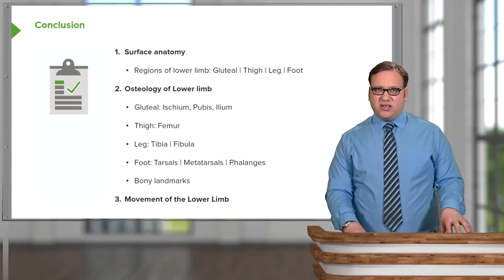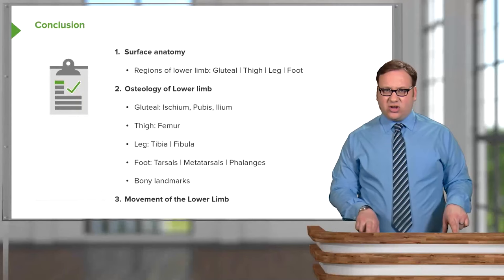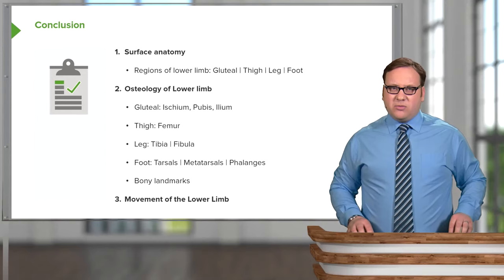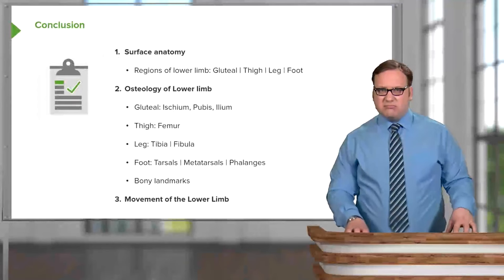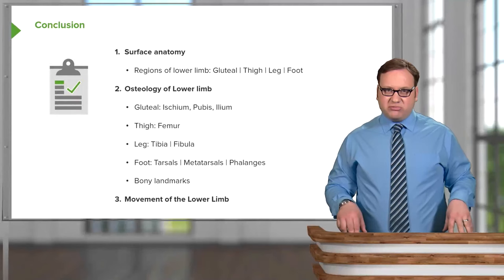In this lecture, we've looked at the surface anatomy of the lower limb — the inferior appendicular skeleton — covering the gluteal, thigh, leg, and foot regions. We've looked at the osteology, including the ischium, pubis, and ilium of the hip bone; the femur of the thigh; the tibia and fibula of the leg; and the tarsals, metatarsals, and phalanges of the foot, along with numerous bony landmarks. Finally, we briefly looked at the movements of the lower limb.